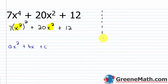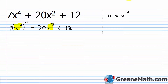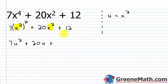Let's go ahead and use u. So u is going to be equal to x squared. That means everywhere I see an x squared, I'm going to plug in a u. So I rewrite this problem as 7u squared — since x squared becomes u, then (u) squared — plus 20u plus 12. Now if I look at this, it matches a format that I'm familiar with.